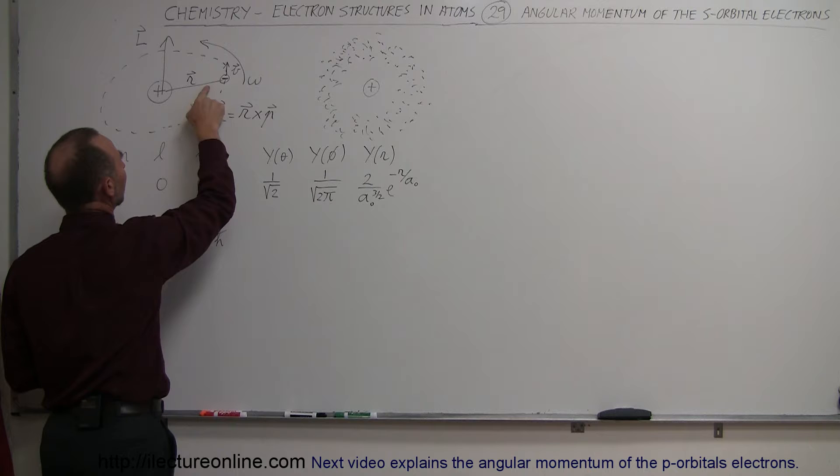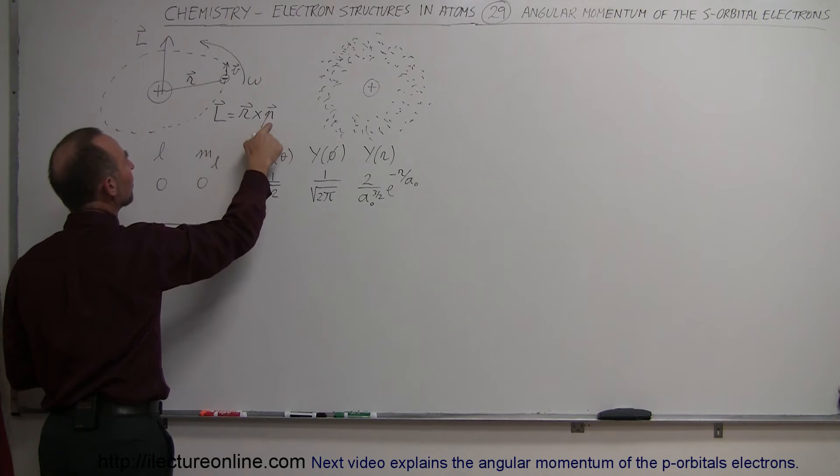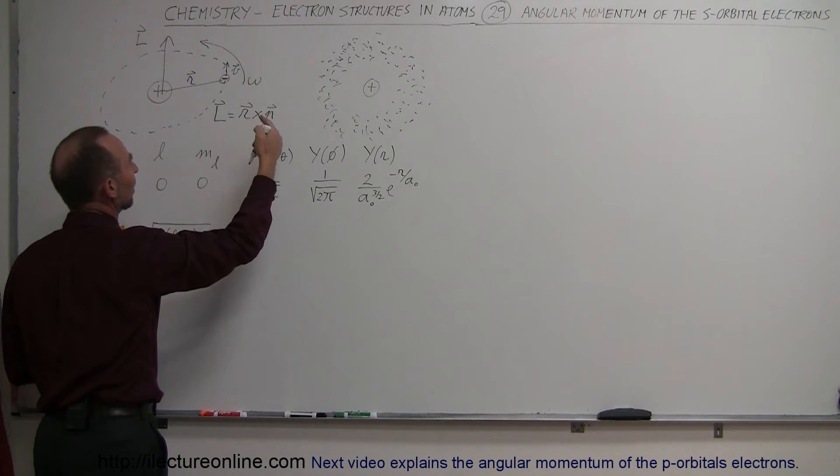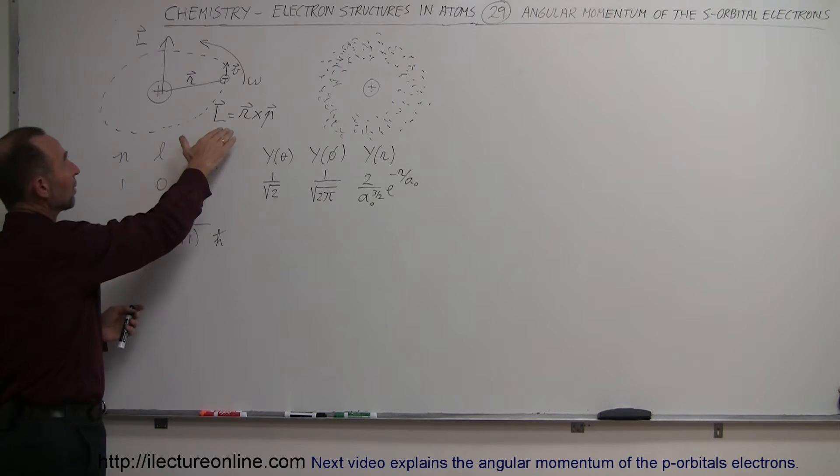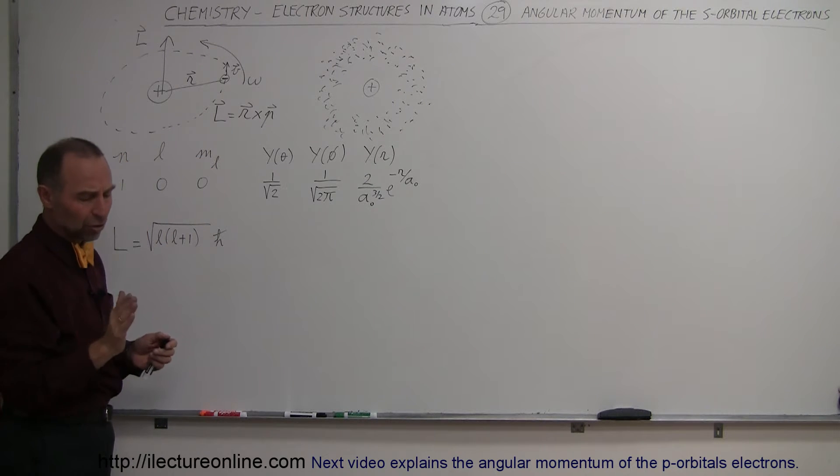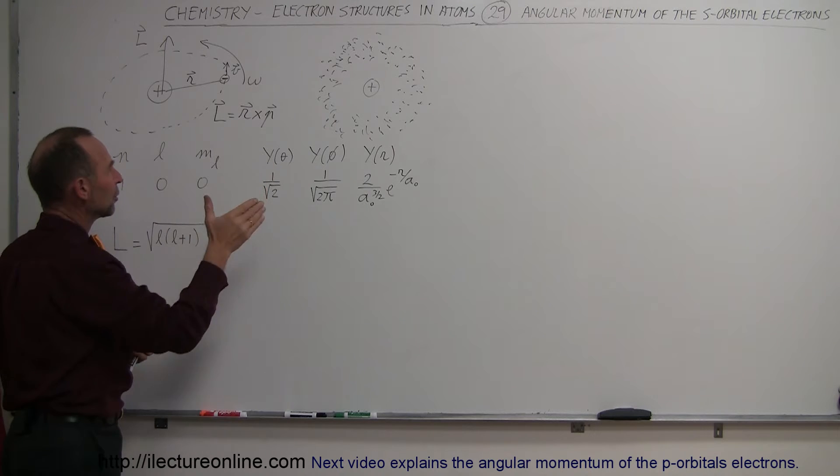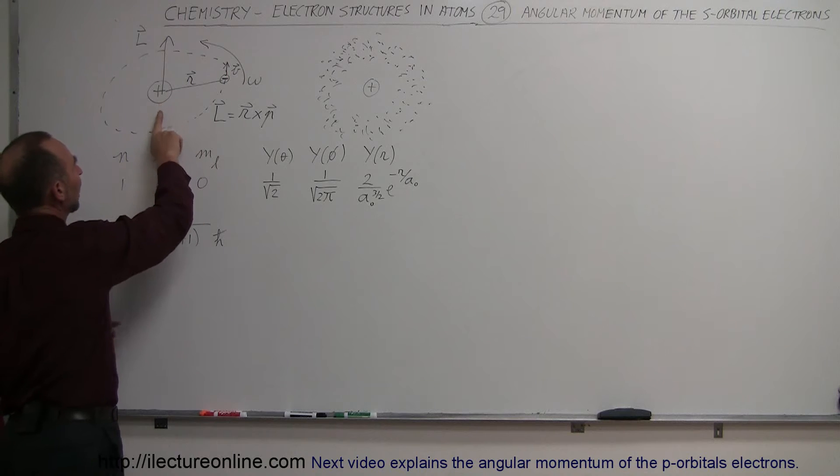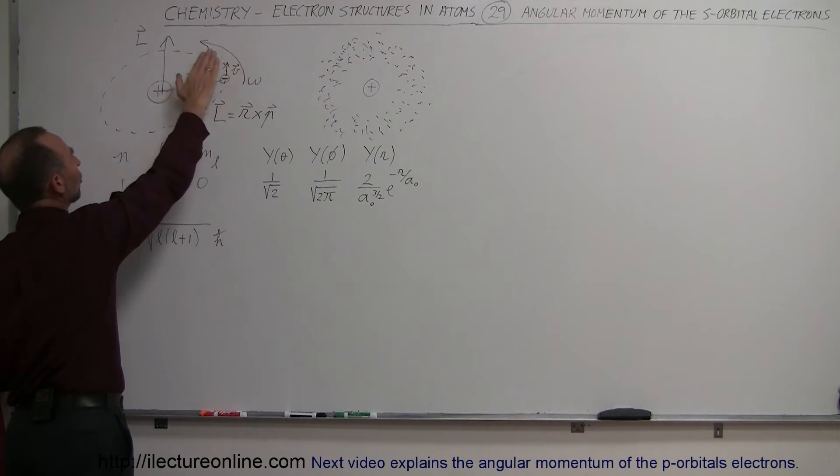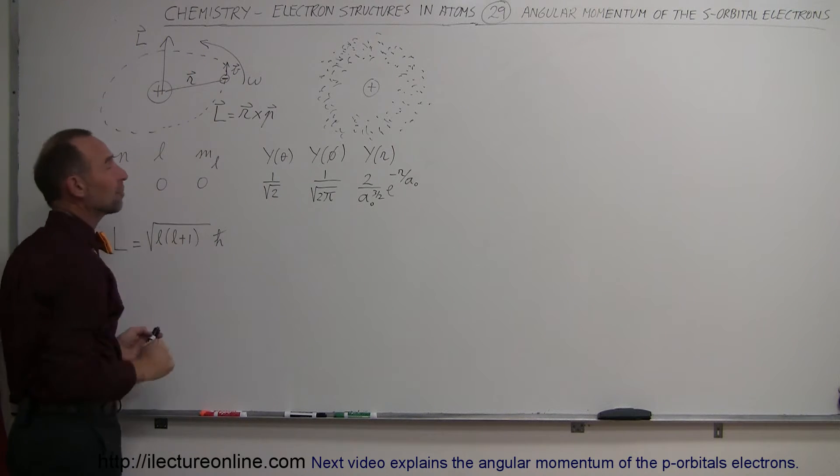It's the position vector multiplied by the momentum vector, which is m times velocity. The direction of the angular momentum vector: when you curl your fingers around the path of the orbit, your thumb will point in the direction of the angular momentum vector, perpendicular to the plane of the orbit.